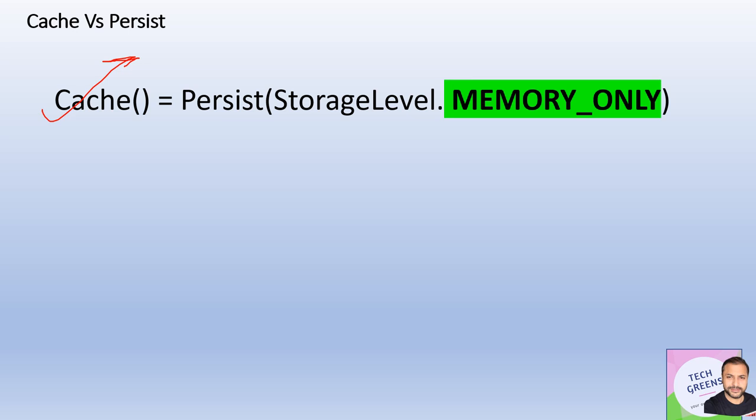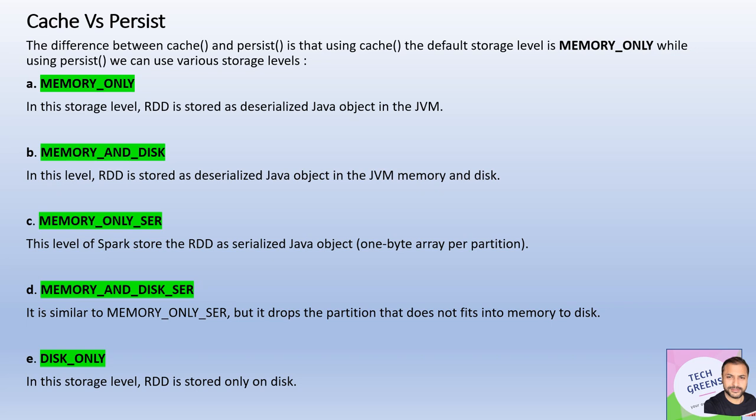The Spark UI will give us the right information about what is happening behind the scenes when you call cache or persist. At a very high level, the cache API doesn't take any parameter, but it is equivalent to the persist API with a storage level of MEMORY_ONLY. So cache is nothing but a wrapper on top of persist with the default storage level as MEMORY_ONLY. The persist API, on the other hand, gives you the flexibility to pass in a parameter about what storage level you want to use to save your RDDs and DataFrames.